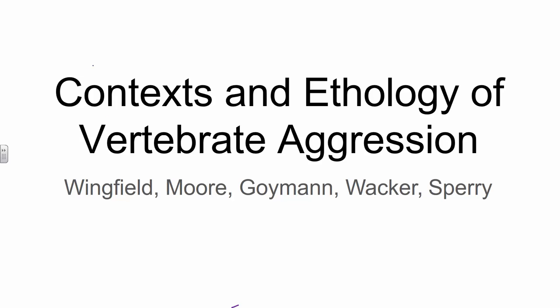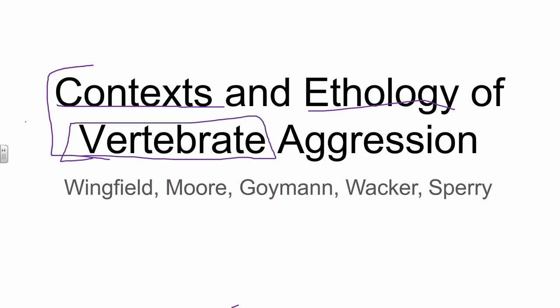This particular chapter we're going to talk about context and ethology of vertebrate aggression. That's something new. Who remembers when we talked about this kind of aggression with invertebrates? Would you specifically ask us about crabs? So we're going to talk about vertebrates this time.